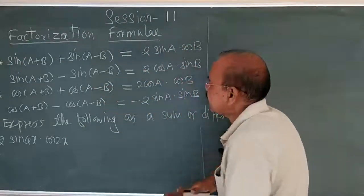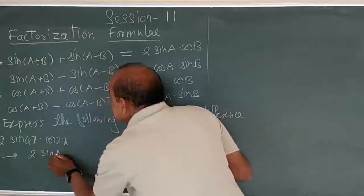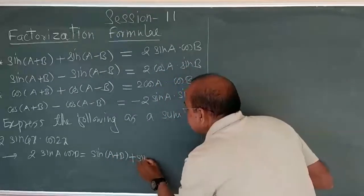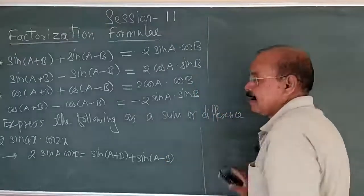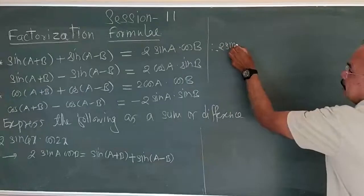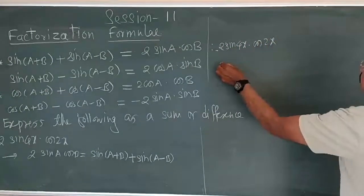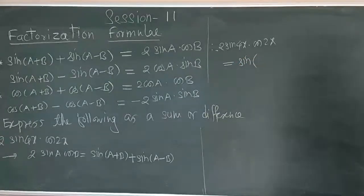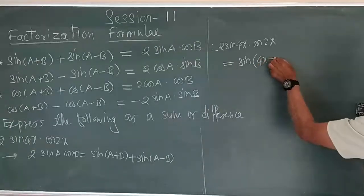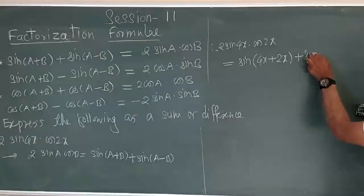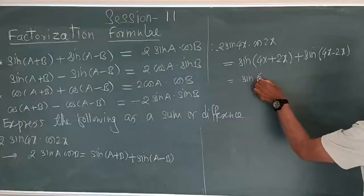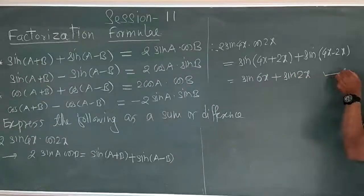We know: 2 times sin A cos B equals sin A plus B plus sin A minus B. Using this formula: 2 times sin 4x into cos 2x equals sin of A plus B, where A is 4x and B is 2x, plus sin A minus B. And that is equal to sin of 6x plus sin of 2x.